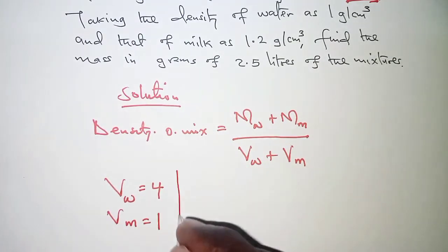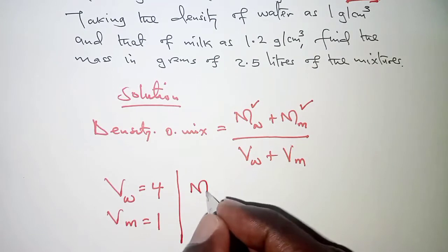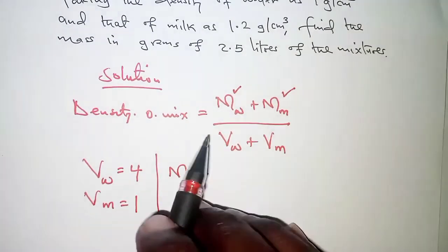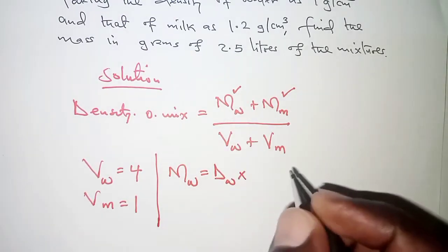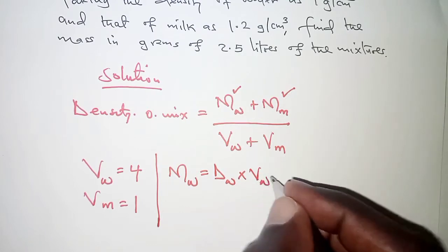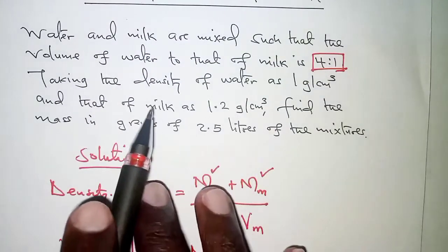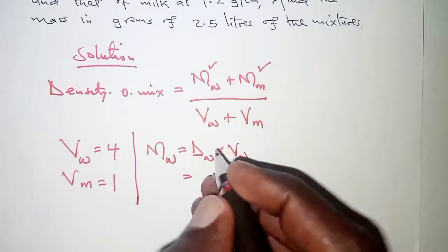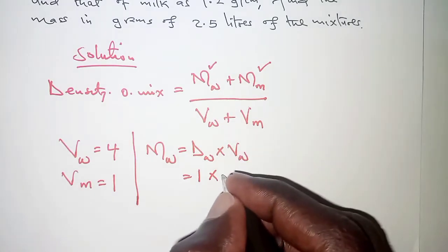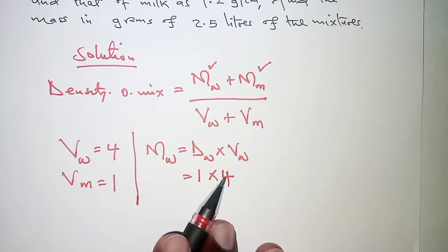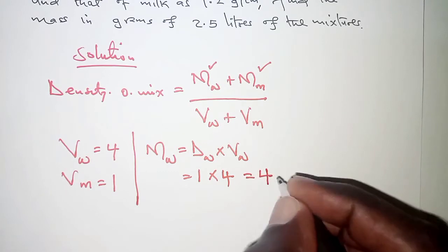From this we can determine the mass of water and mass of milk. Mass of water is obtained by multiplying density of water times volume of water. Density of water is 1 gram per cubic centimeter, times the volume which is 4 cubic centimeters. When we multiply this we get 4 grams.